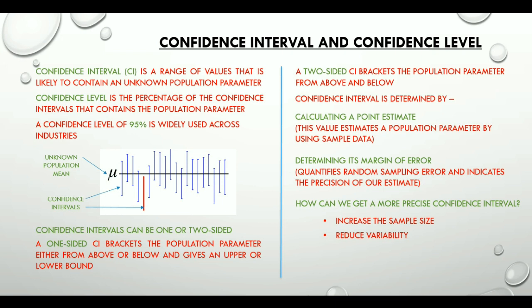Thirdly, we can use a one-sided confidence interval because it has a smaller margin of error. However, it indicates only whether the parameter is either less than or greater than a cut-off value. It does not provide any information about the parameter in the opposite direction.